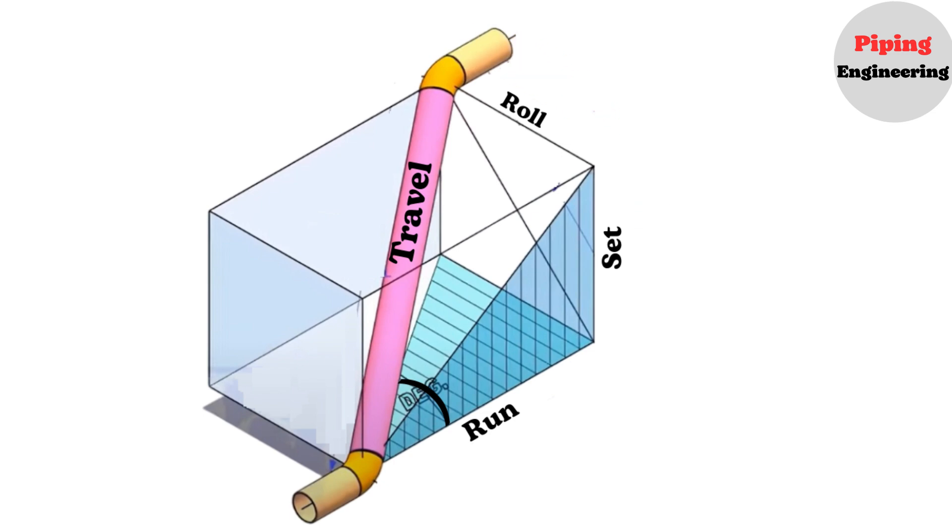These terms help accurately define the spatial positioning of the pipeline as it moves through different planes. Understanding these directional components is essential for calculating dimensions and angles accurately in piping layouts.